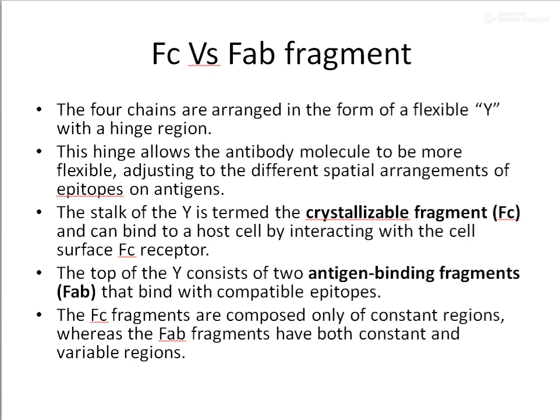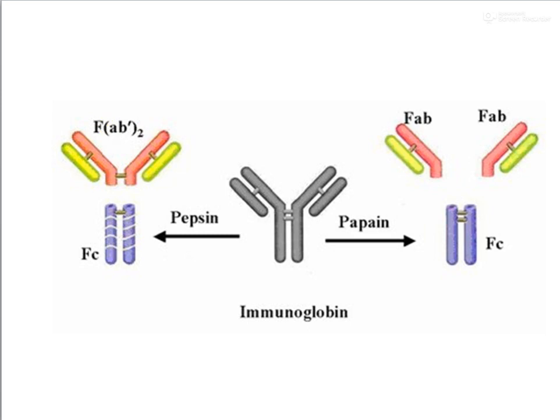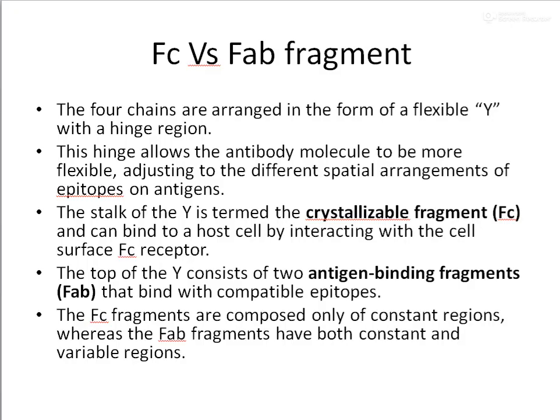The top of the Y consists of two antigen-binding fragments that bind with compatible epitopes. The part of the antigen with which the antibody interacts is called the epitope — only small regions on the surface of the antigen are bound. It is the FAB portion which interacts with the epitope of the particular antigen. The Fc fragments consist of only two constant regions, whereas the FAB fragments have both the constant and the variable regions.